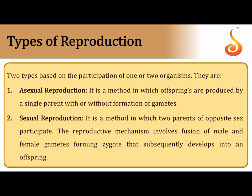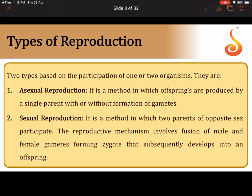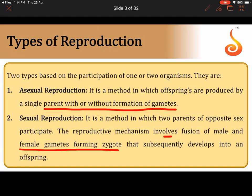Types of reproduction are asexual and sexual reproduction. Asexual reproduction does not involve formation of gametes or gamete fusion, but sexual reproduction involves formation of two types of gametes — the male and the female gametes — which fuse to result in the formation of a zygote.